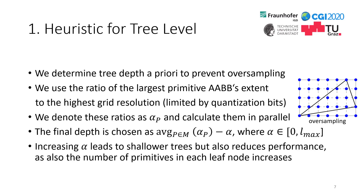The initial tree depth determination is needed to choose an appropriate grid resolution that does not result in excessive oversampling. We find an appropriate grid resolution for each primitive by calculating the ratio of the largest primitive AABB extent to the highest possible grid resolution, which is governed by the bits spent for quantization. We denote those ratios as alpha_p, computed in parallel, and by parallel reduction we find their average. We also introduce a tuning parameter alpha in the interval from 0 to the maximum level, allowing users to enforce shallower trees.